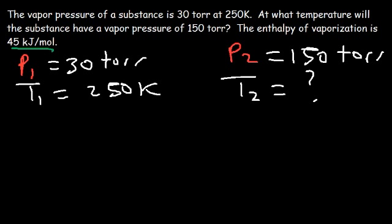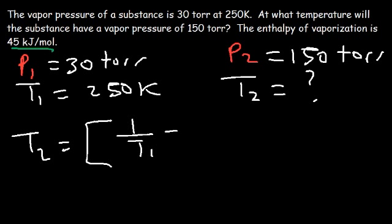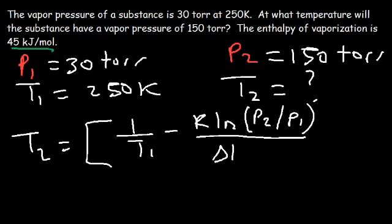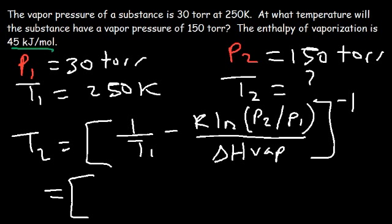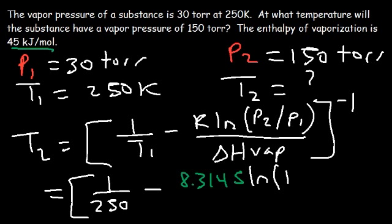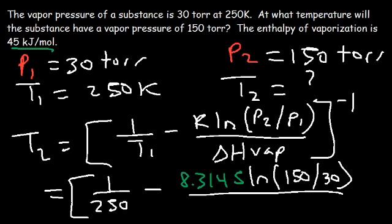We need a different form of the equation: T2 = (1/T1 − R × ln(P2/P1) / ΔH_vap)^(−1). Plugging in: T1 = 250 Kelvin, R = 8.3145, ln(150/30) = ln(5) = 1.609437, multiply by 8.3145 to get 13.38167, then divide by 45,000. We need to convert 45 kilojoules to 45,000 joules.